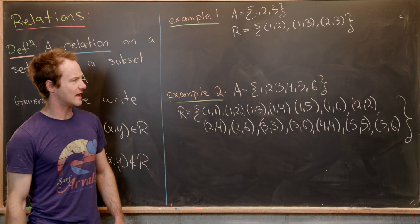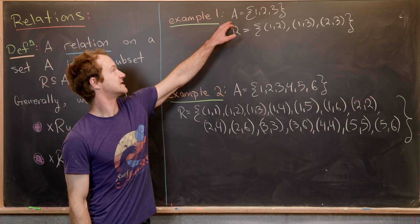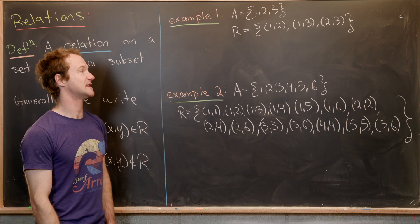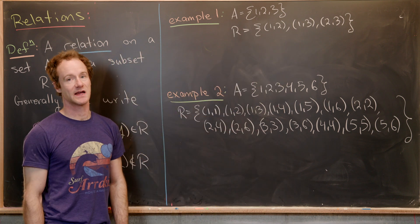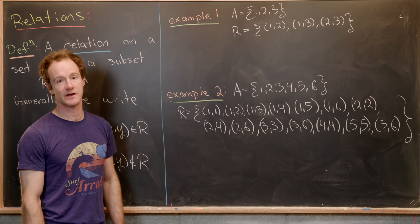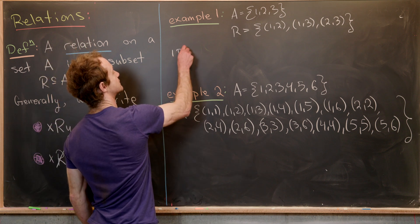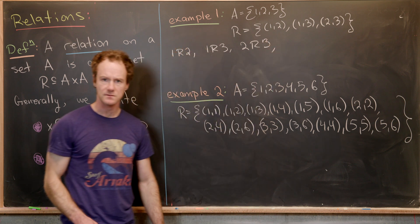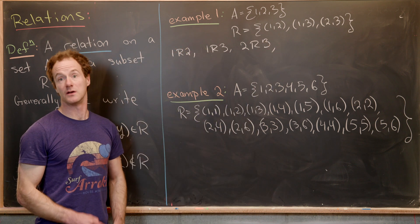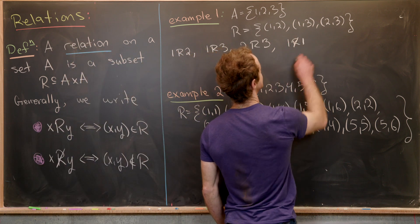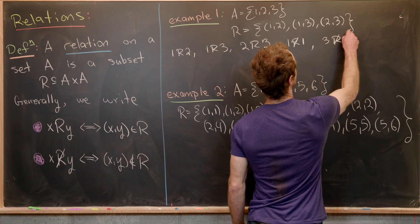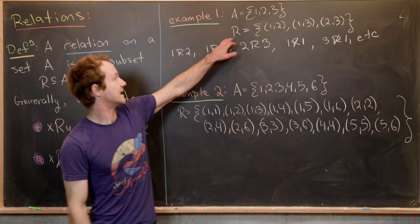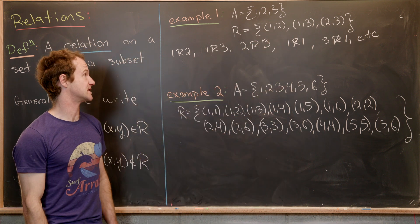Here are two basic examples of relations. First, let A = {1, 2, 3}. We have a subset R of A × A given by the three-element set {(1,2), (1,3), (2,3)}. That means one is related to two, one is related to three, and two is related to three. All other pairs are not related — so one is not related to itself, three is not related to one, and so on. These are equivalent ways of writing the ordered pairs being inside the subset R.